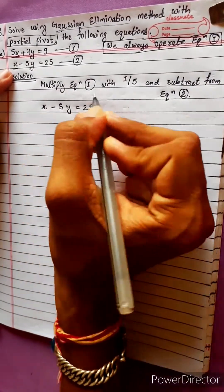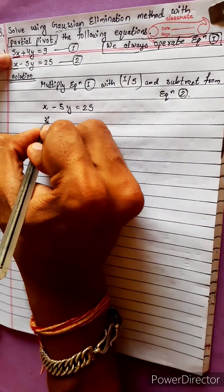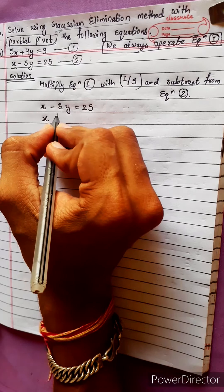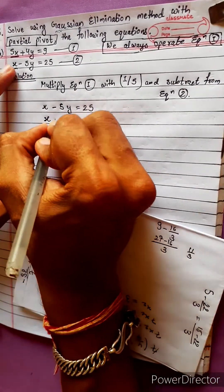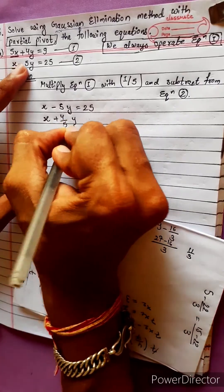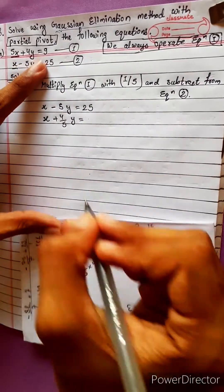Equals to 25. Let's proceed. Equation 1 multiply with 1/5: 1/5 into 5 is x, 1/5 into 4 is 4/5, plus 4/5 y equals to 9 into 1/5, which is 9/5.